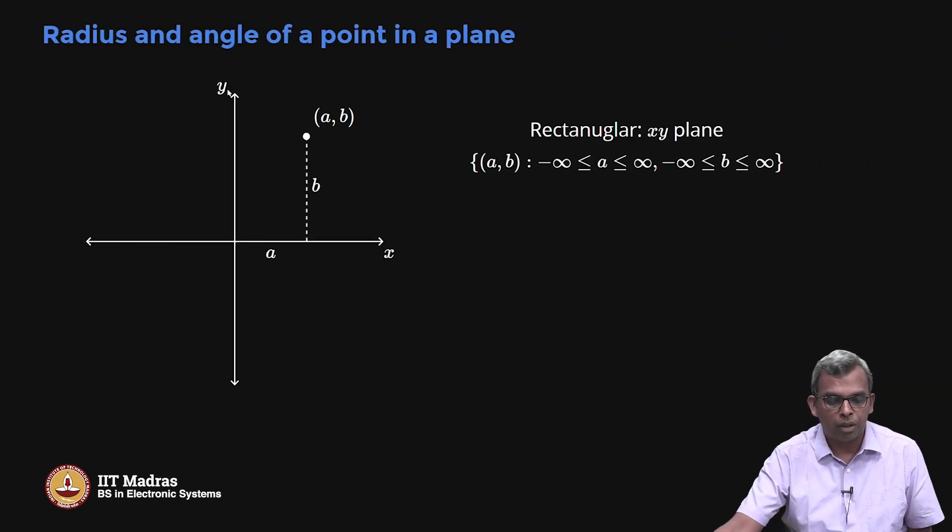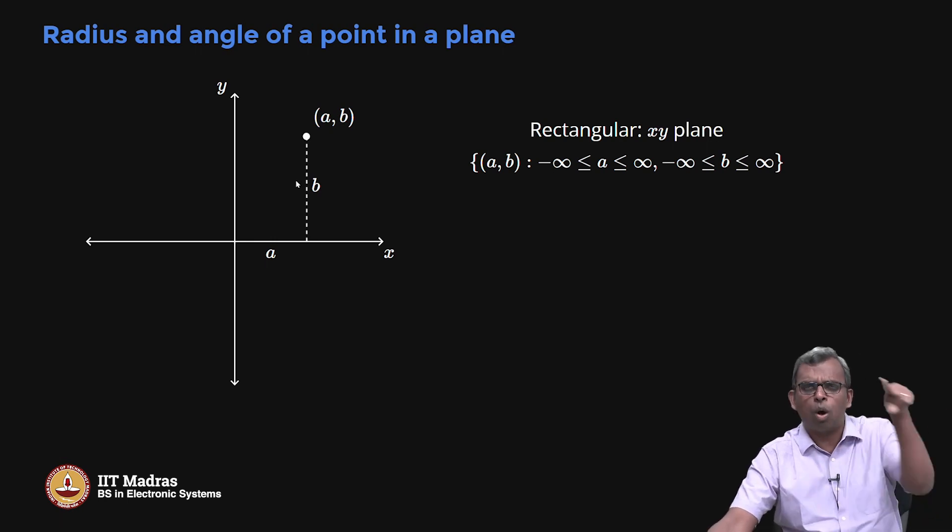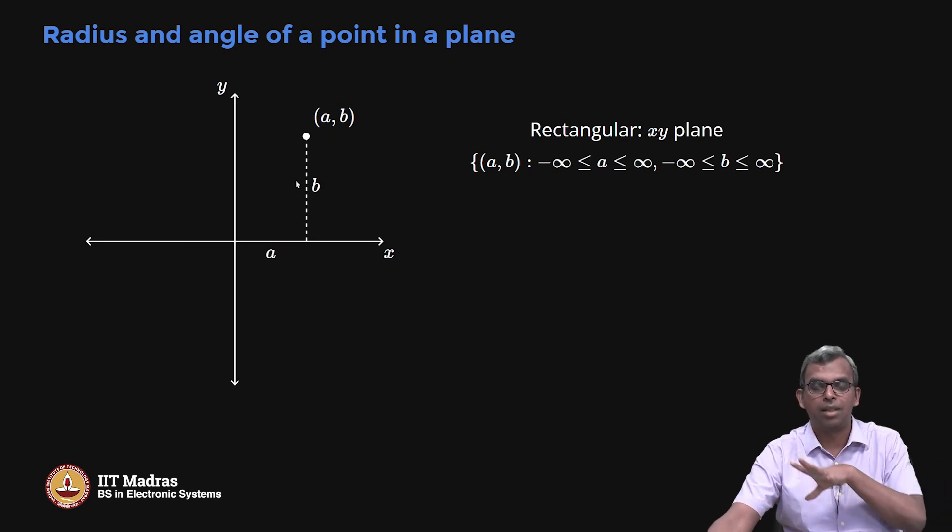Now if you have the xy plane and I have the point (a, b), I know it is a distance a horizontally from origin and b vertically from the origin. So this is called a rectangular coordinate system. You have a point (a, b), it is horizontal distance a away from the origin, vertical distance b away from the origin. That is how we define it rectangularly.